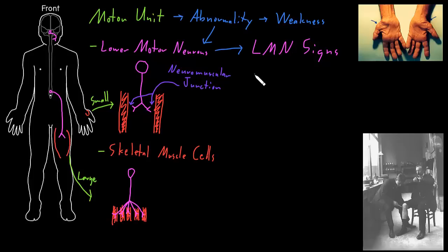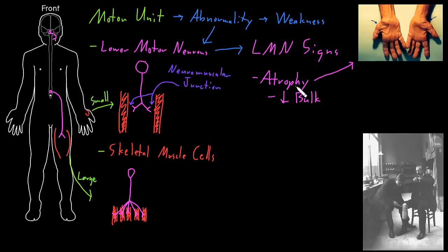The first lower motor neuron sign is atrophy of skeletal muscle — atrophy means decreased bulk or decreased size of skeletal muscle. Here's a photograph of a person who has a lower motor neuron abnormality causing atrophy. They had lower motor neurons passing through the wrist innervating skeletal muscle cells in the hand, and some kind of abnormality in the wrist injured those lower motor neurons. If you look at these particular muscles in that part of the hand, they have shrunk and shriveled up — we call that atrophy of those skeletal muscles.